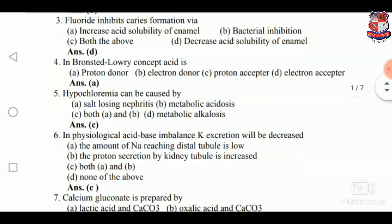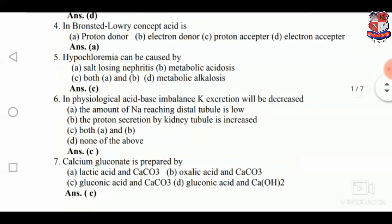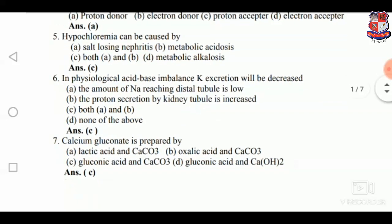In the Bronsted-Lowry concept, acid is A — proton donor. Hypochloraemia can be caused by C, that is both salt-losing nephritis and metabolic acidosis.